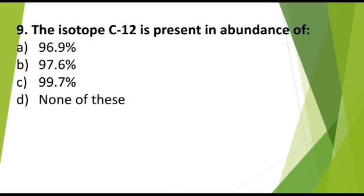MCQ number 9: The isotope C12 is present in abundance of Option A: 96.9%, Option B: 97.6%, Option C: 99.7%, Option D: None of these. Correct answer is none of these.